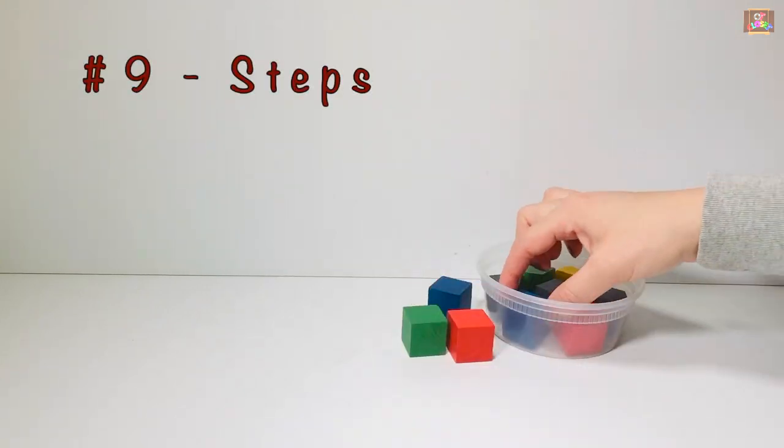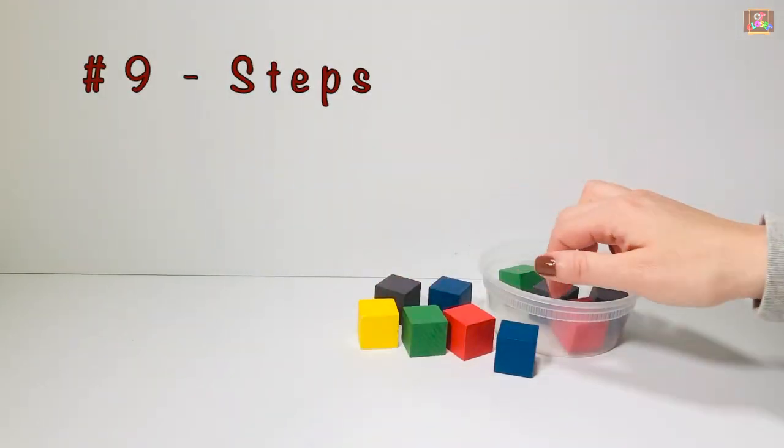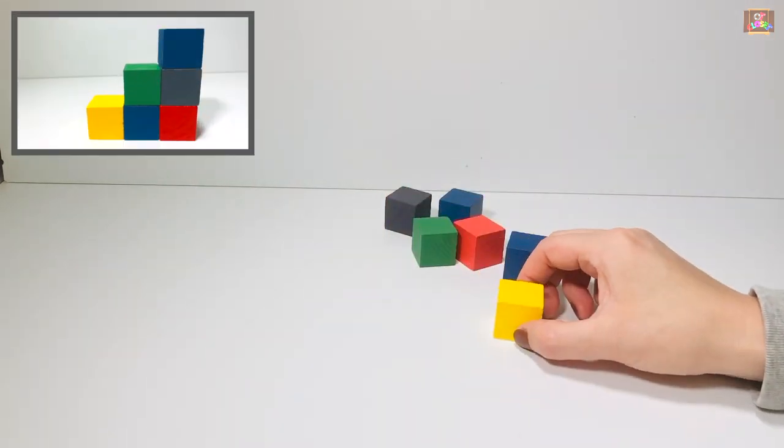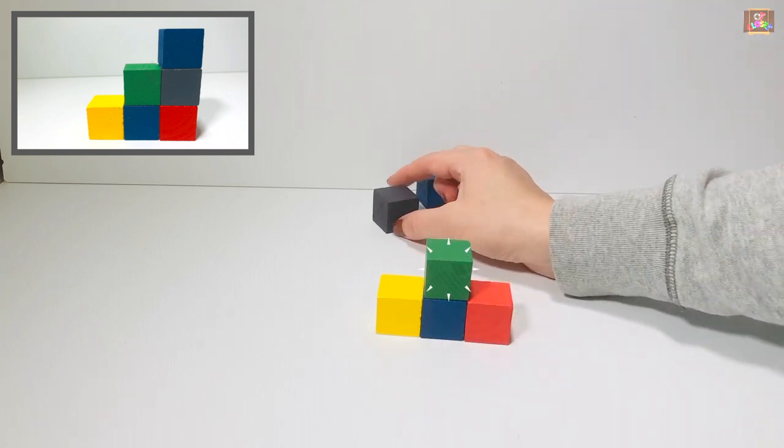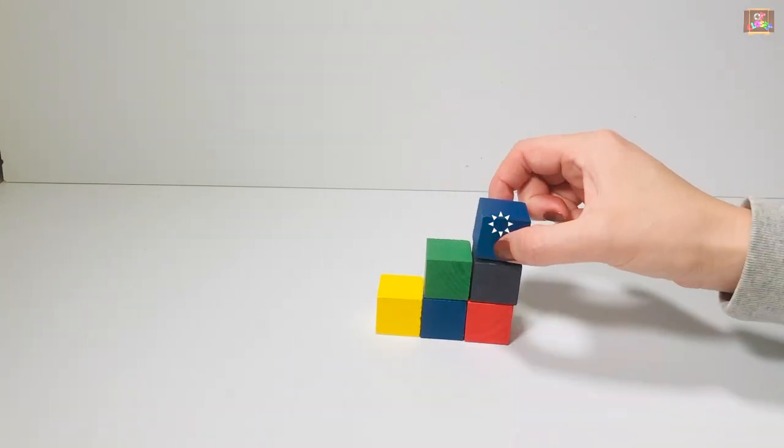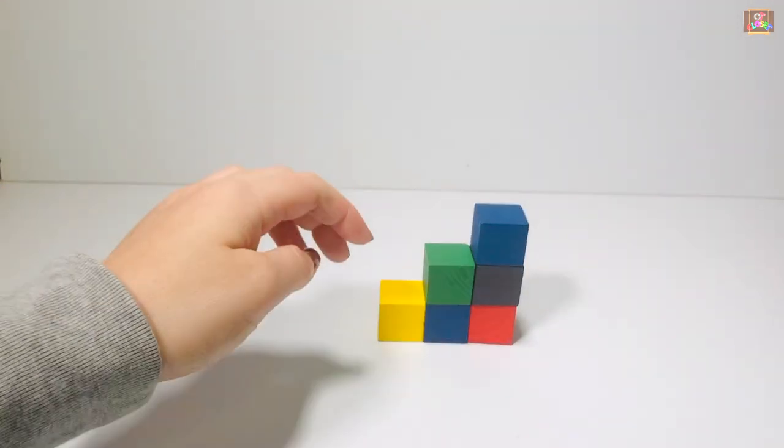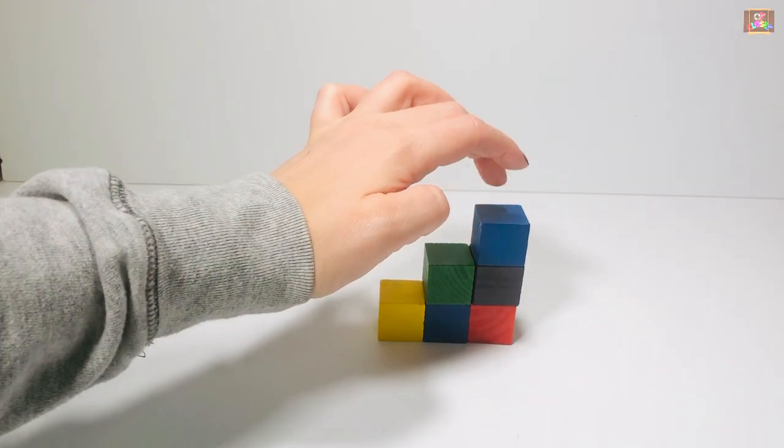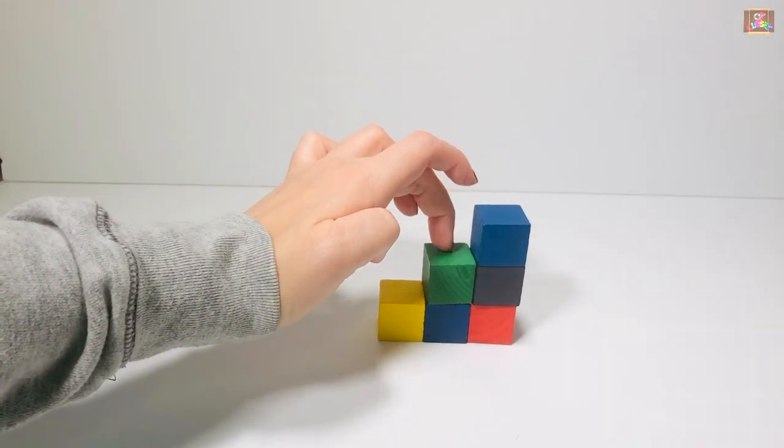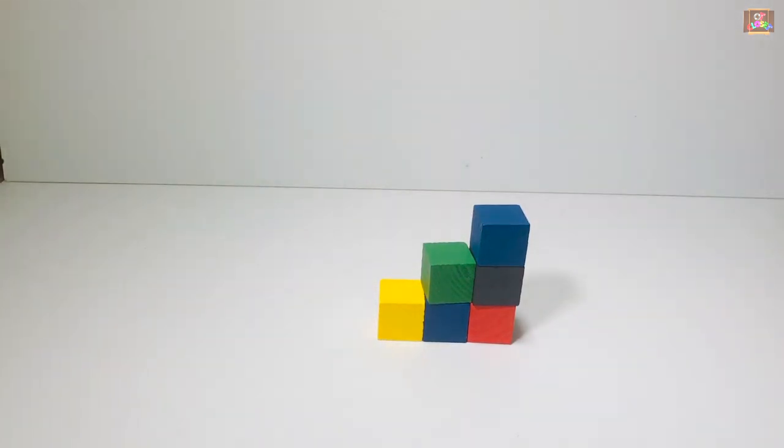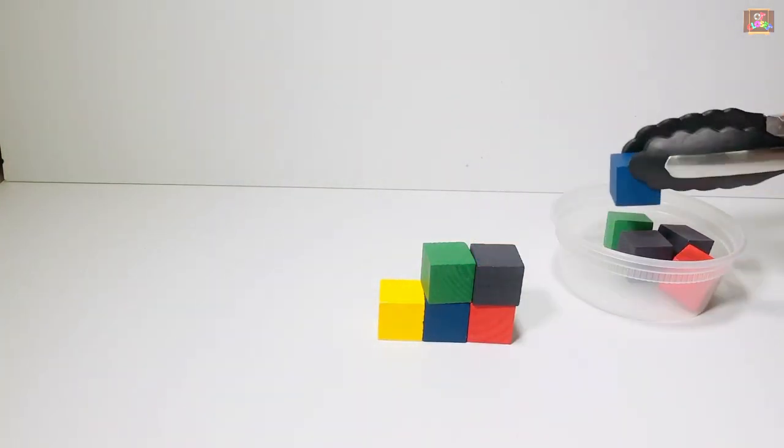Game number nine: get six blocks to make steps. Run your fingers up and down, up and down. Use the tongs to put the blocks away.